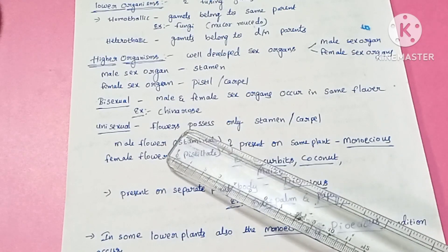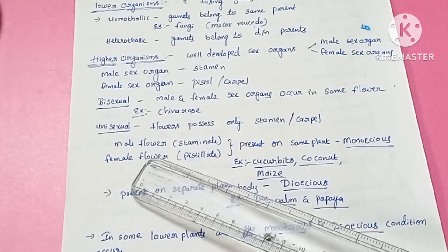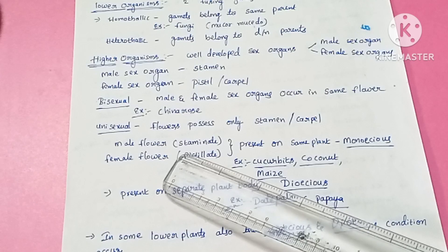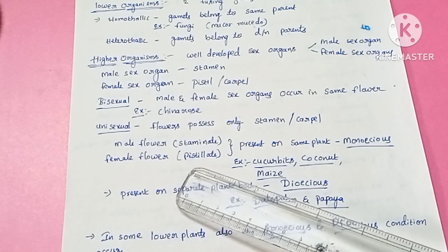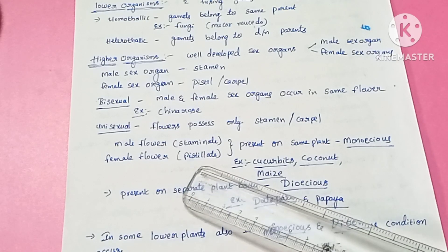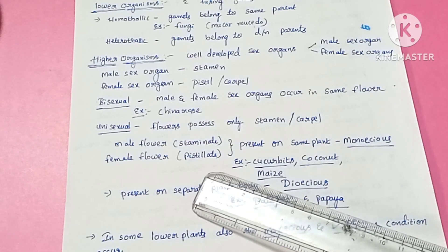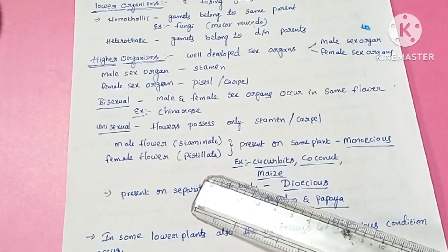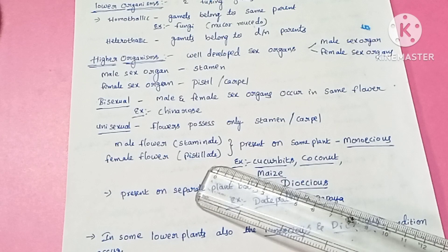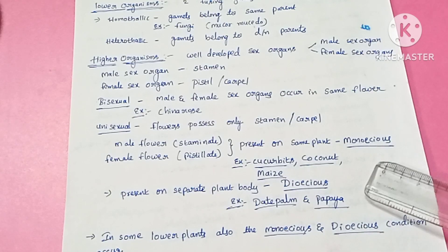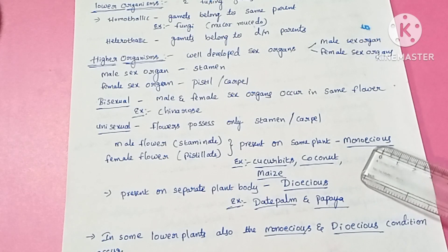If the flower possesses only one sex organ — either stamen or carpel — that is a unisexual condition. In a unisexual condition, there are either male or female sex organs in separate flowers. In a unisexual condition where both types of flowers occur on the same plant, that condition is called monoecious.